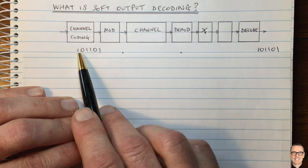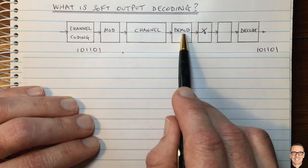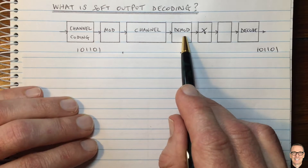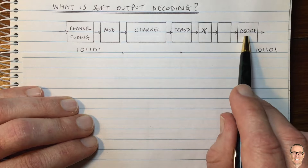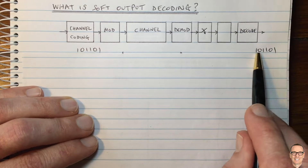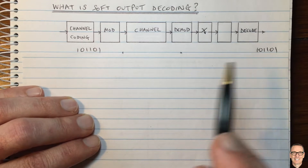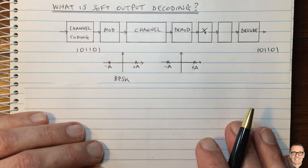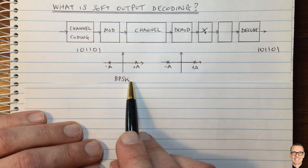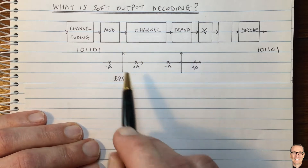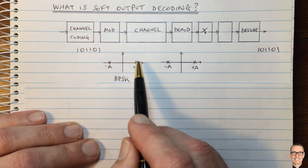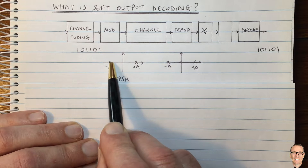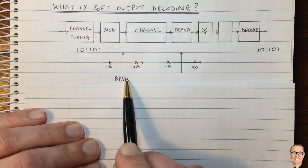For more details about coding, modulation, and demodulation, look in the description below this video where you'll find lots of videos on the channel. If we've decoded correctly we would get the same data sequence coming out. Now let's think about modulation and demodulation — specifically basic binary phase shift keying. After modulation we are transferring ones and zeros into sinusoidal waveforms that have either a positive phase or a negative phase, and that's BPSK.